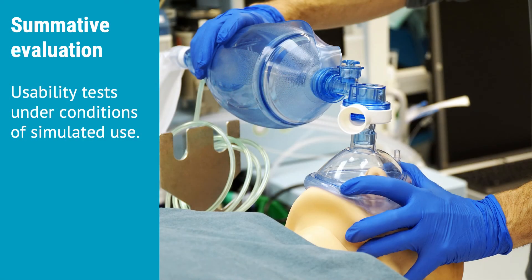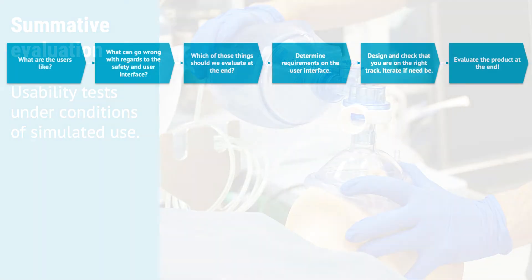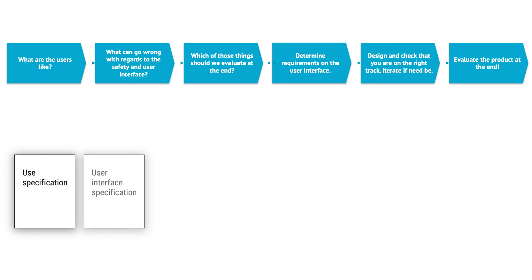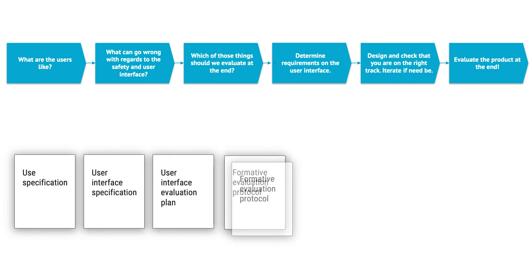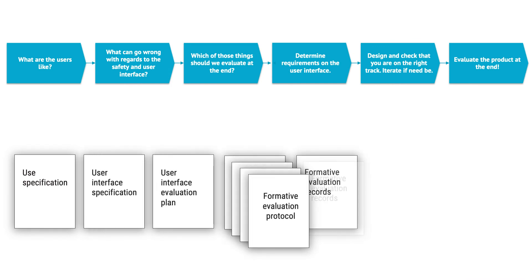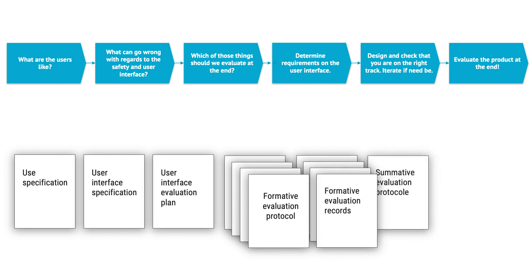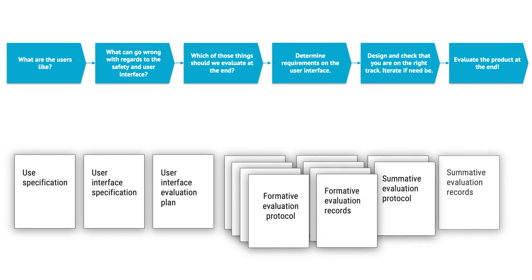Summative evaluation is testing usability under conditions of simulated use, using production units or equivalent devices. It's similar to design validation in method, but the purpose is different. Finally, all the documentation and records created throughout the usability engineering process are referred to as the usability engineering file.